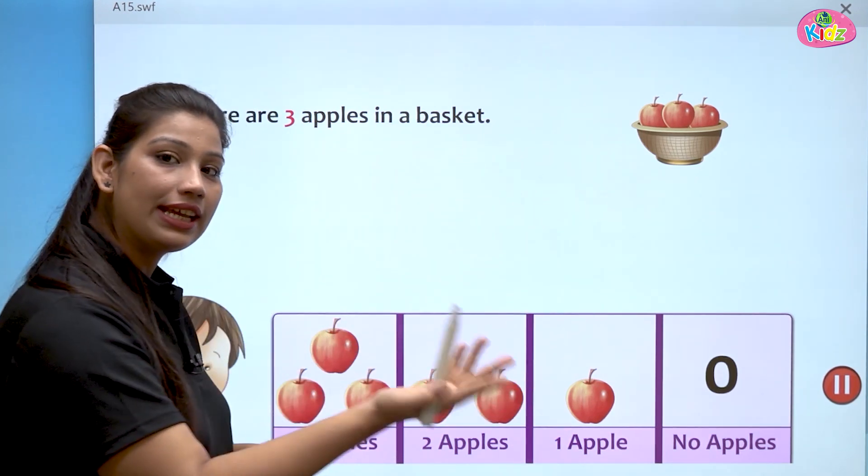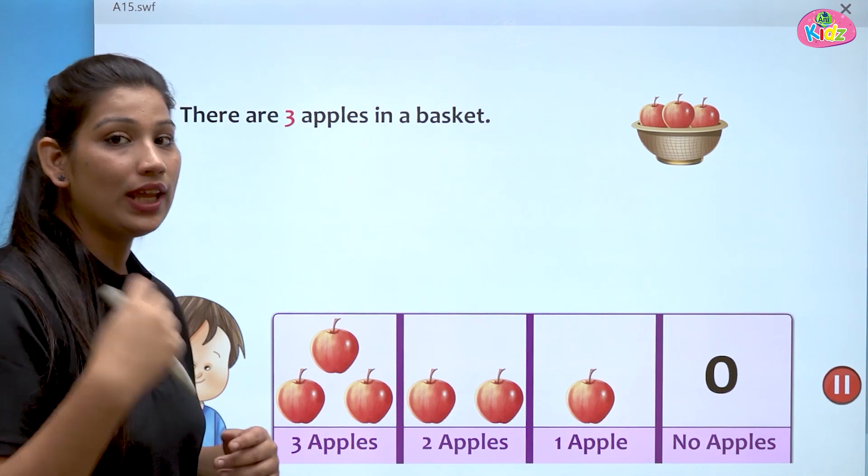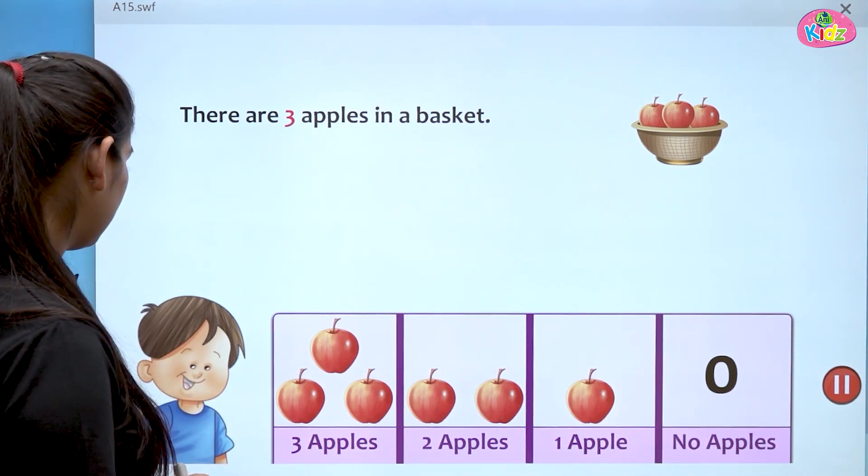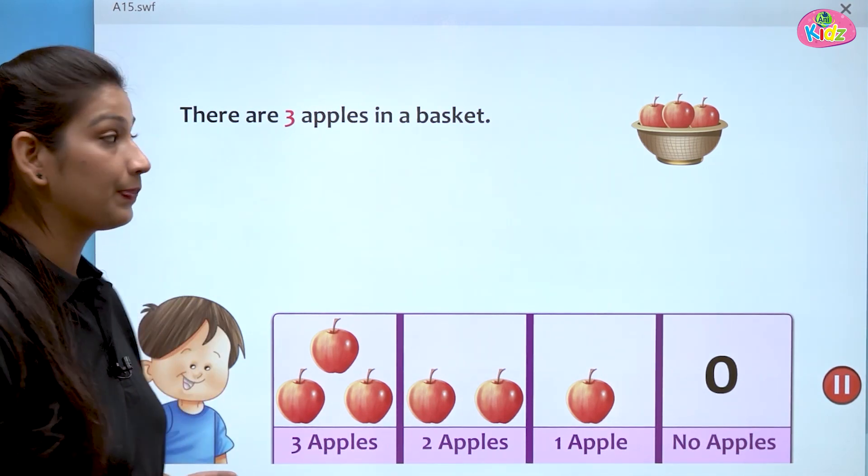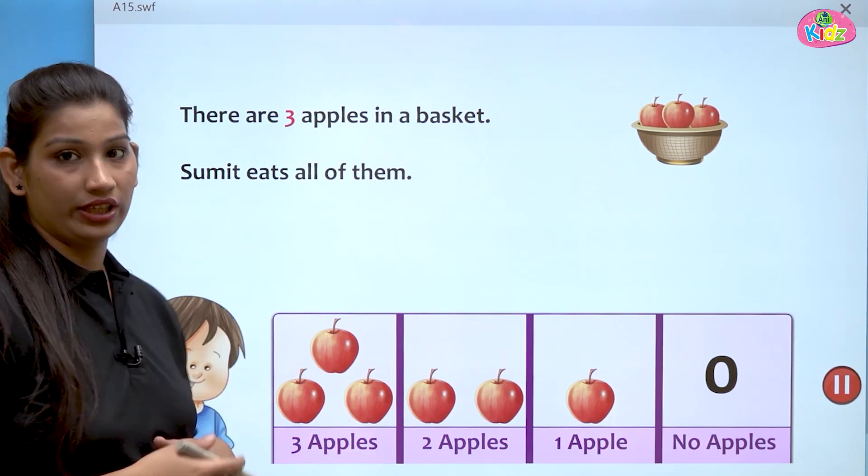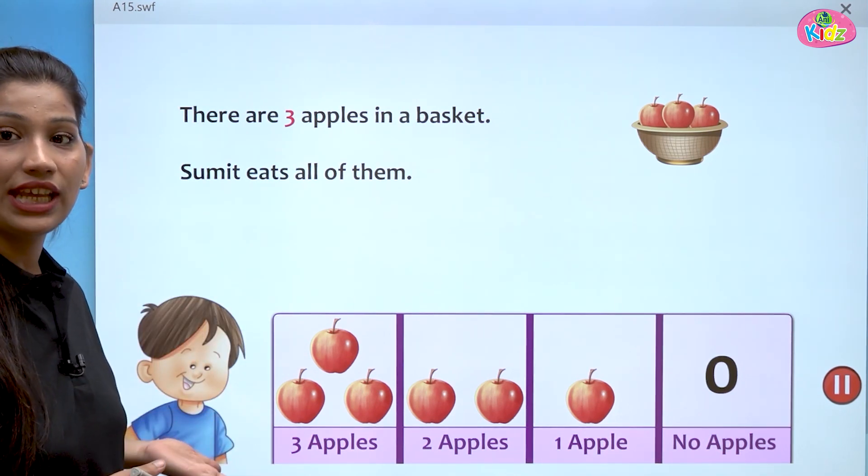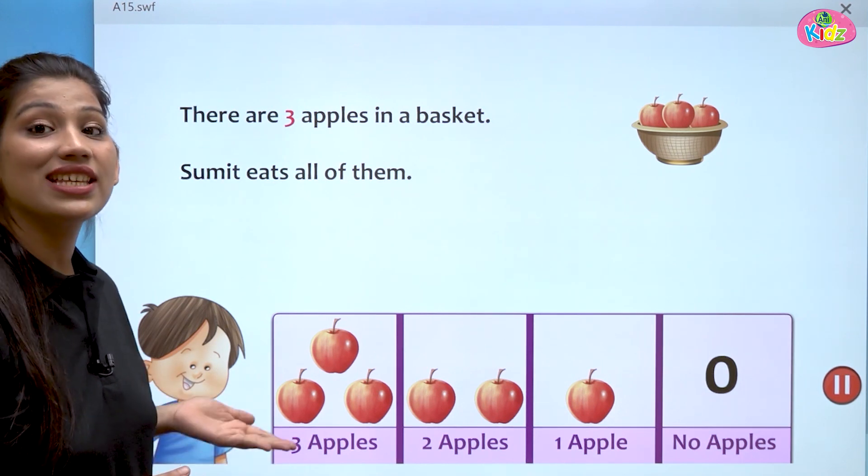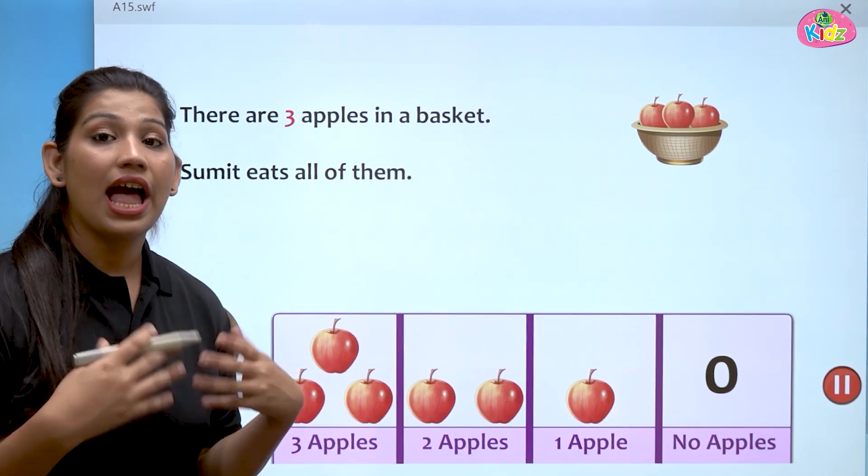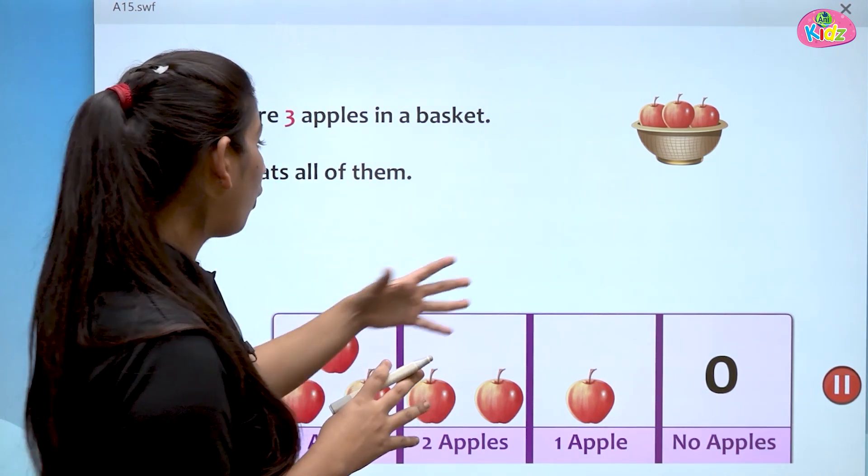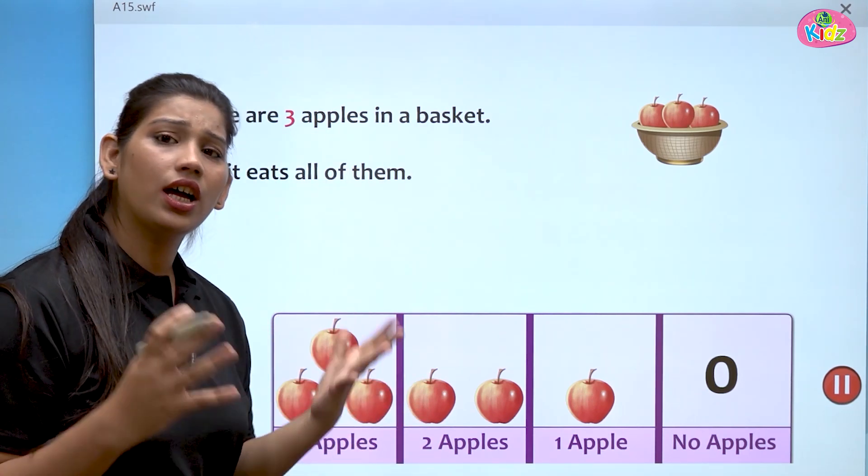One, two, three. I can also see three apples in the basket. Now see what happens. Sumit eats all of them. Here is a boy named Sumit. And Sumit eats all of them. Sumit taare apple kha gya.